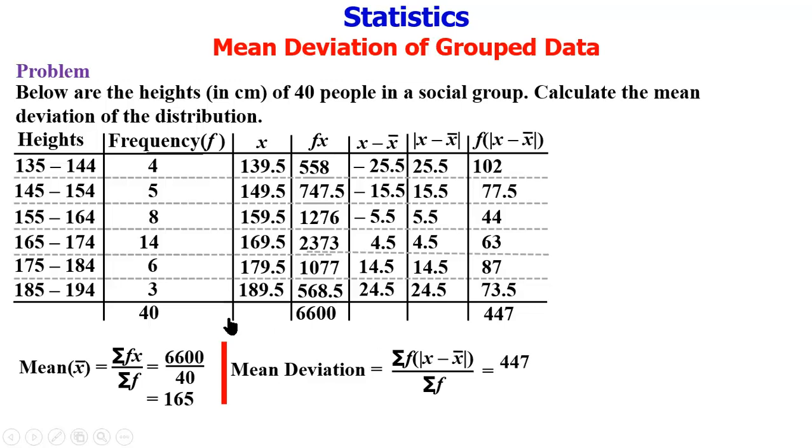So substituting this into the mean deviation formula, this is going to give us 447 divided by 40, and that gives 11.175, which represents the mean deviation of the distribution represented in this table. And that's all for the solution of this problem, and this is where we are ending this tutorial. Thank you for watching, I hope you enjoyed it. Goodbye.